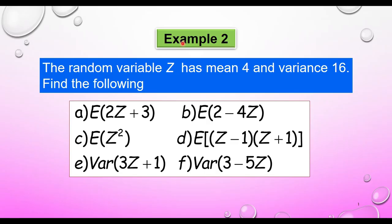Example two. The random variable Z has mean 4 and variance 16. Find: (a) E[2Z + 3], (b) E[2 − 4Z], (c) E[Z²], (d) E[(Z − 1)(Z + 1)], (e) Var(3Z + 1), and (f) Var(3 − 5Z).